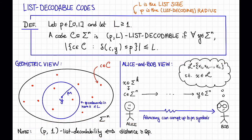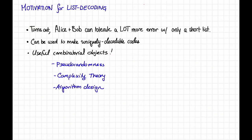Okay, so that's the definition of a list decodable code. Why do we care about such a thing? So there's a number of reasons why we care.